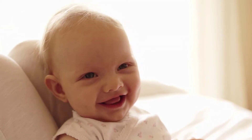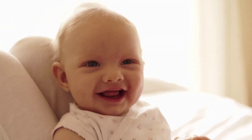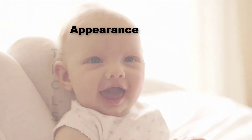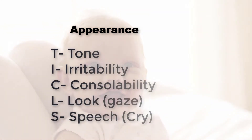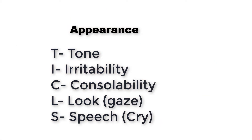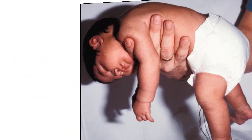First, let's look at appearance. Appearance uses the acronym TICKLES — T-I-C-L-S — which refers to tone, irritability, consolability, look or gaze, and speech or cry. These are all things you can assess from across the room.